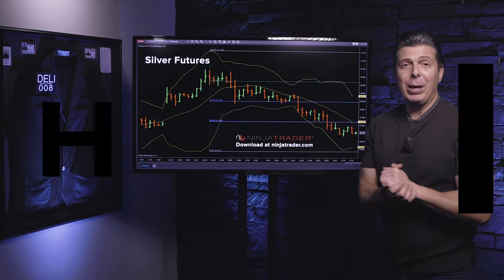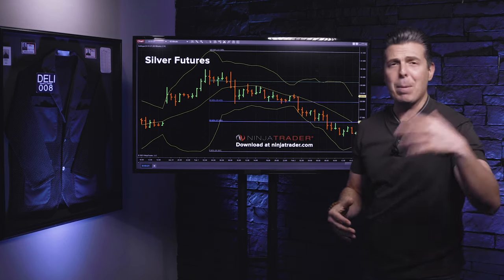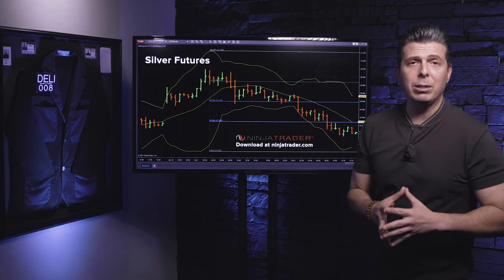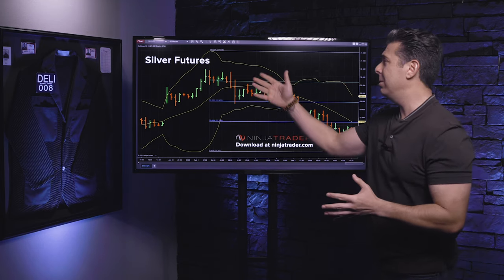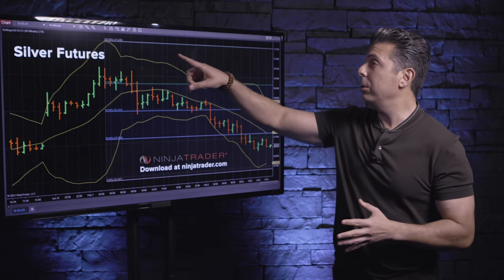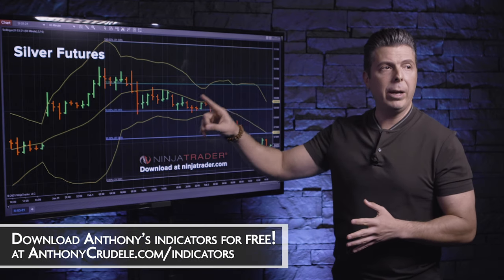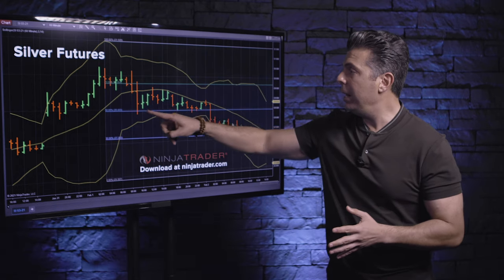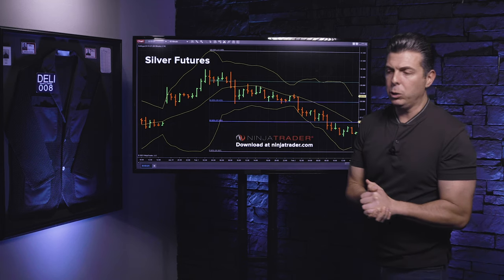A couple weeks ago I opened up my DMs on Twitter — loving the questions and comments, keep them coming everybody, my DMs are open. Tons of questions about silver, of course, because that's really a hot topic right now. So I chose silver as the market of choice here on Ninja. I use a 60-minute chart with Bollinger Bands 20.3 standard deviation and Fibonacci retracement tool with 70, 50, and 30 percent. So what's the charting edge this week?